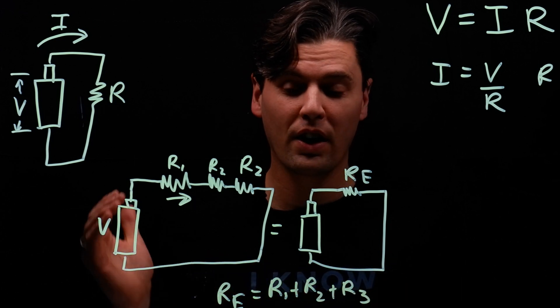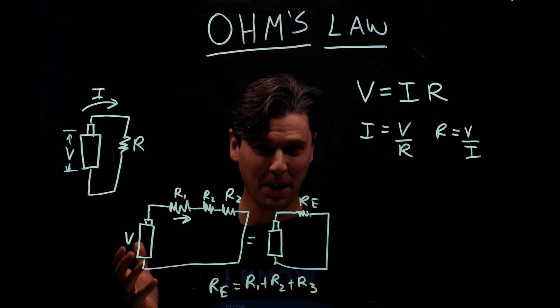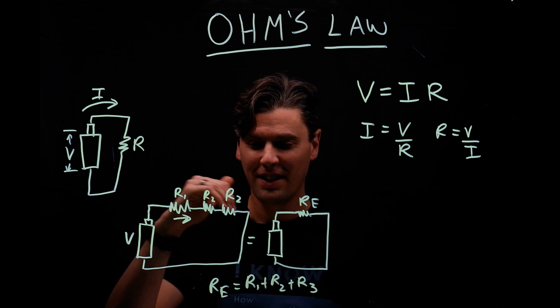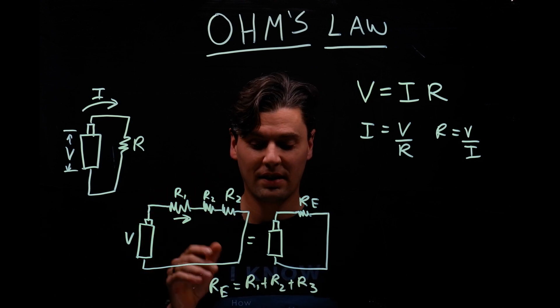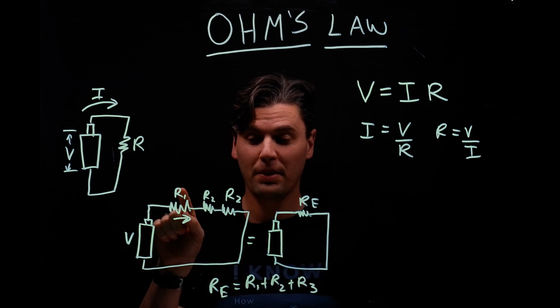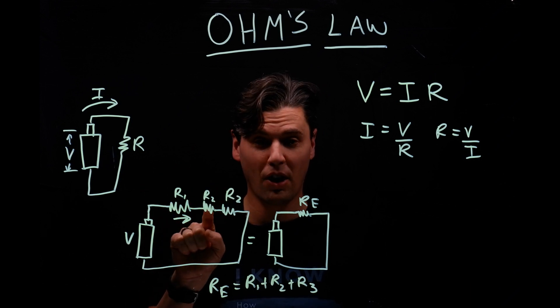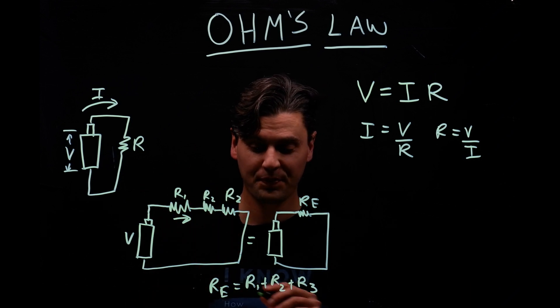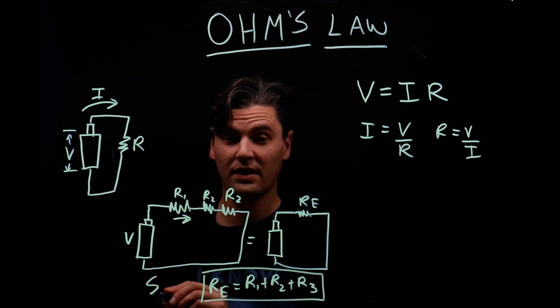And basically the current that's going through the circuit can't disappear. You always have the same amount of current. That's called Kirchhoff's rule. And that tells us that the equivalent resistor to add up these three, if they're going in series, it's just going to be R1 plus R2 plus R3. So that's if they're going in series.